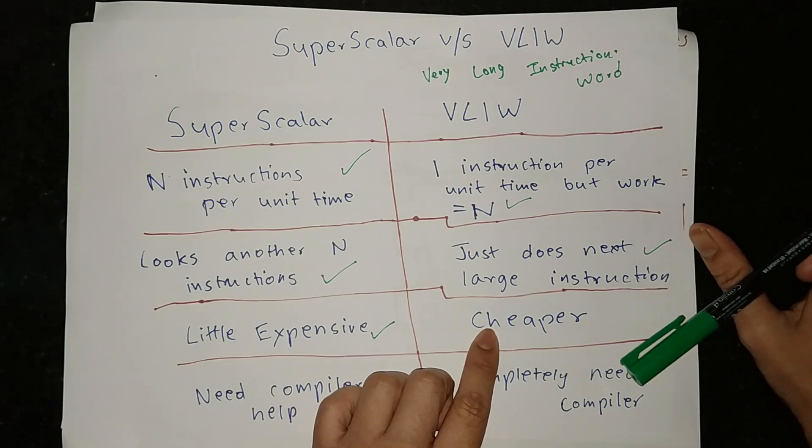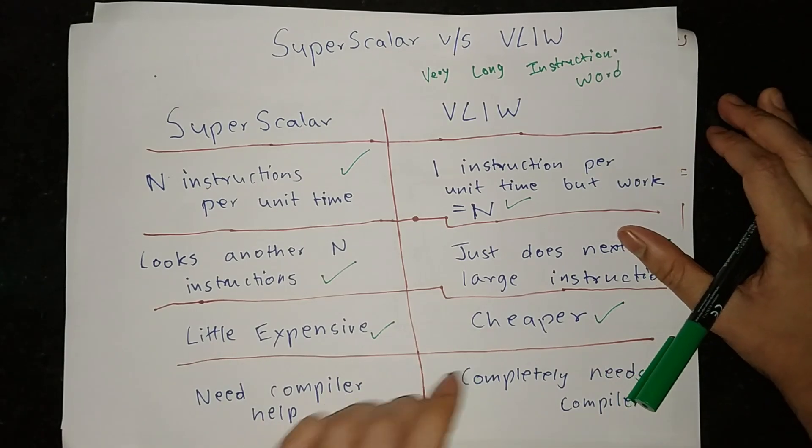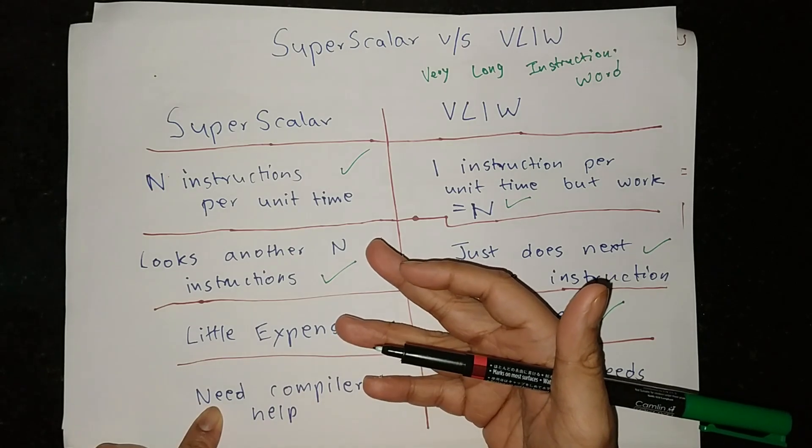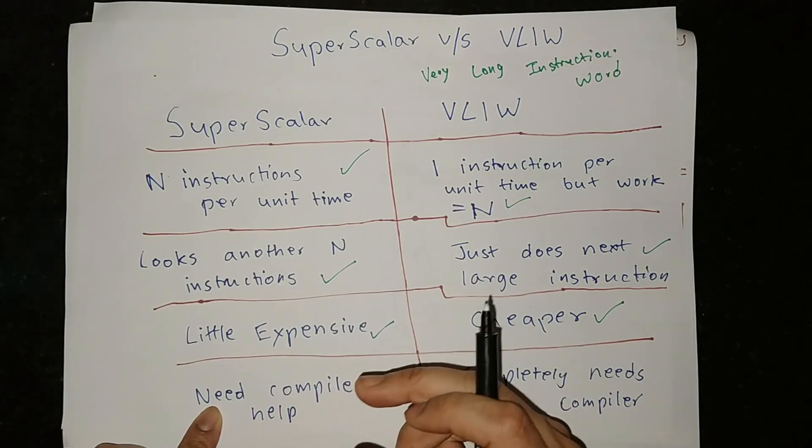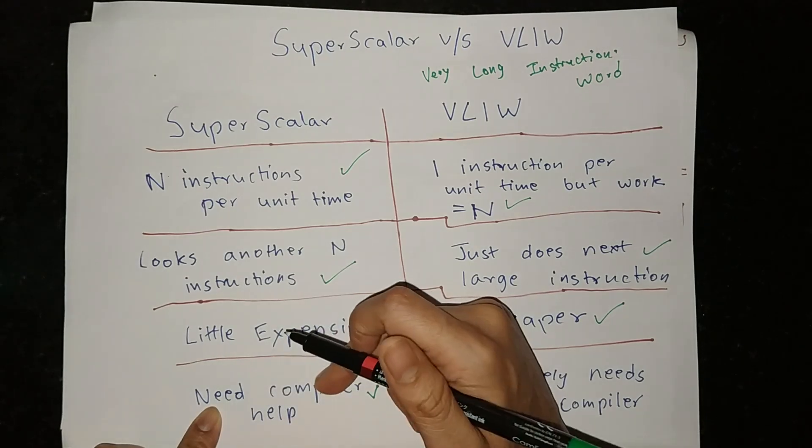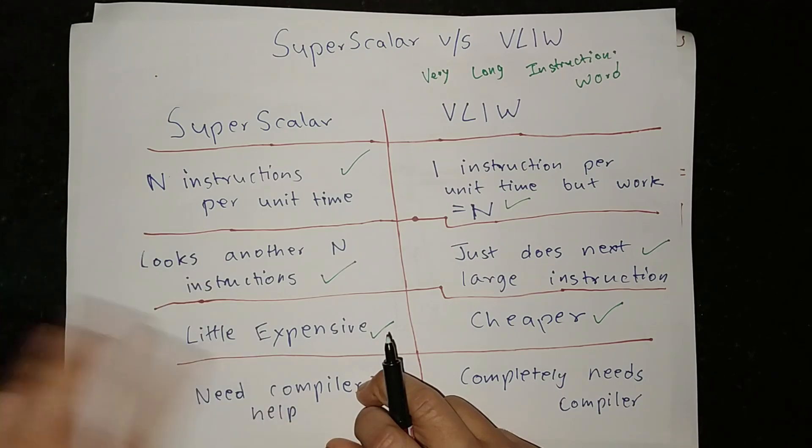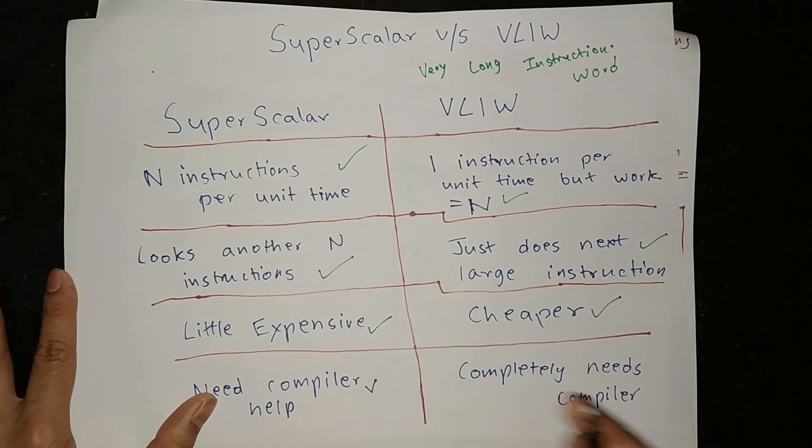This is why we need to change our architecture in software and in hardware. So we need long instructions. This happens, but if you get the compiler then it will quickly understand because it doesn't have to do anything. Only in a single unit time we need different instructions.